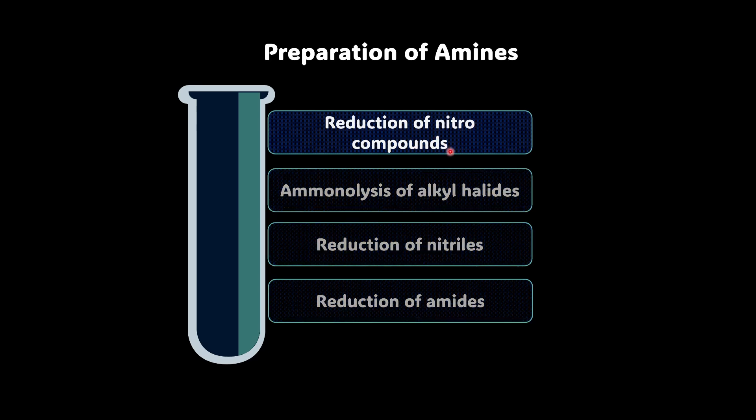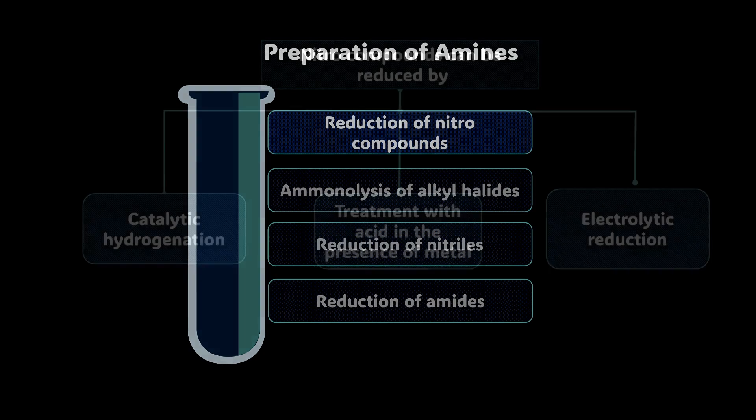Well, if you reduce nitro group, you can easily get NH2, right? So NO2 can easily go to NH2, but how? We have three ways of doing it.